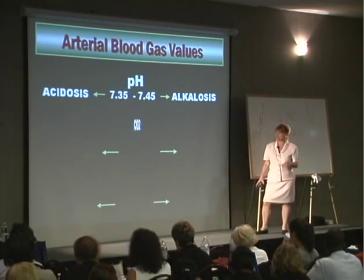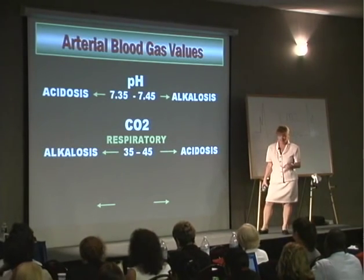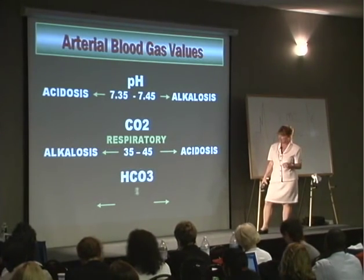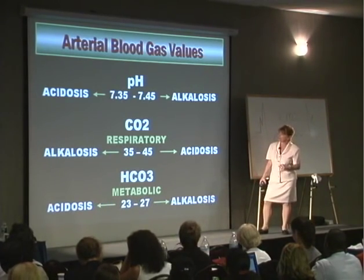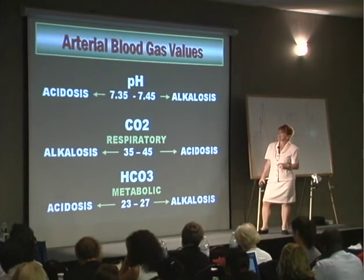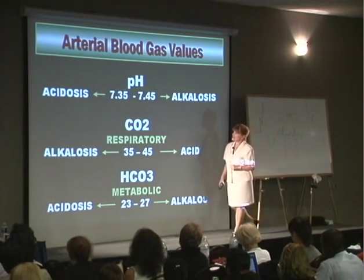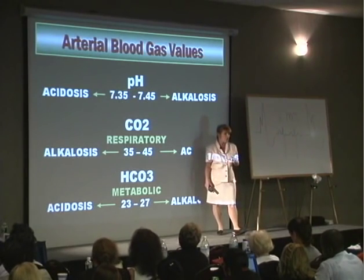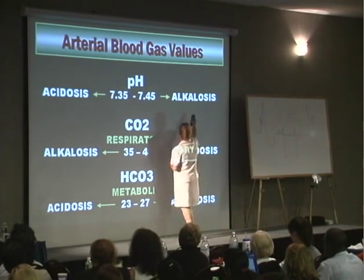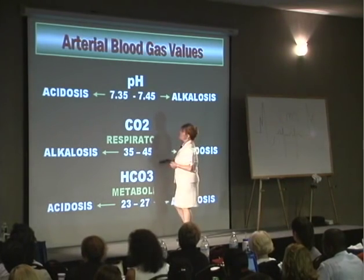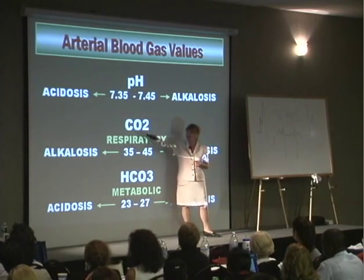Let me just review the normal parameters just to make sure your values are similar to mine. The normal pH is between 7.35 and 7.45. If you wake up one day and have a pH greater than 7.45, you're in a state of alkalosis. Whereas if you wake up one day and have a pH less than 7.35, you're in a state of acidosis.